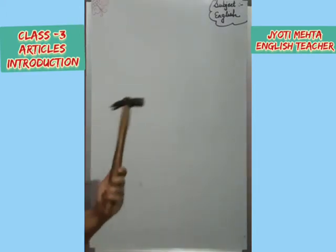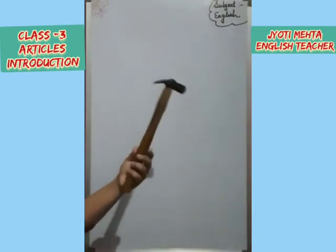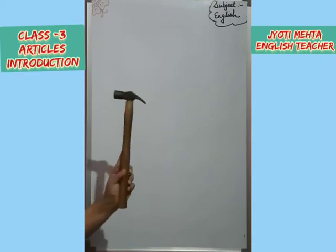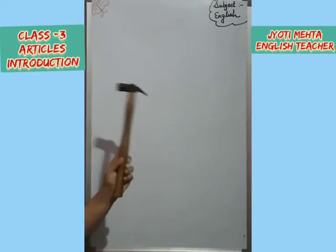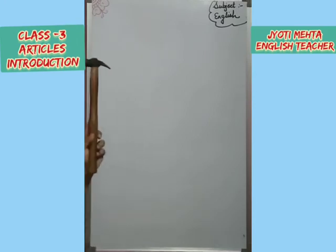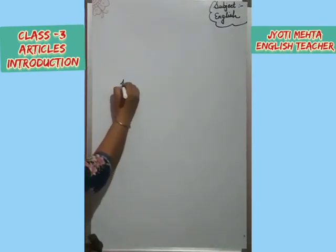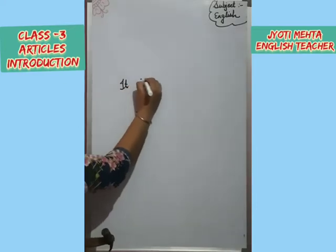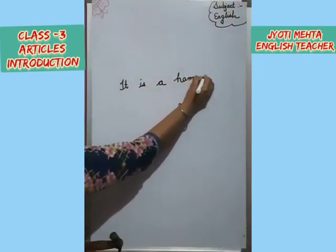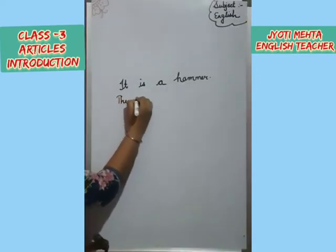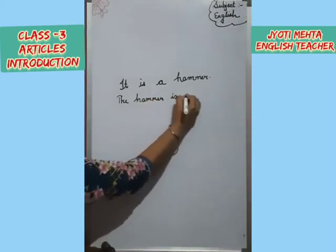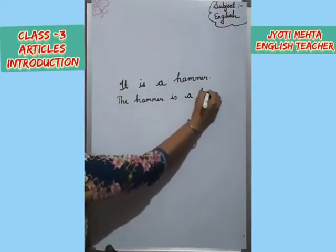Now children, tell me — you have told me earlier also that it is a hammer. Now just tell me what it is. It is a tool. It is a stationary item. What is it? What can we say? It is a tool. So it is a hammer — the hammer is a tool.